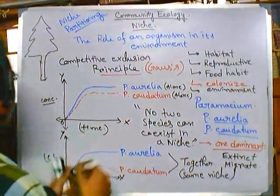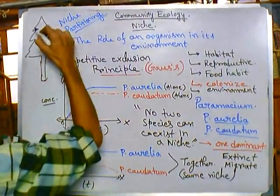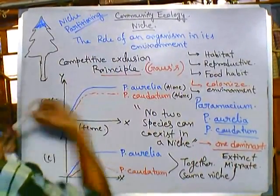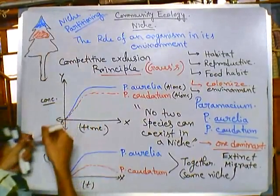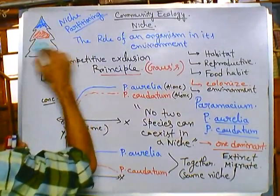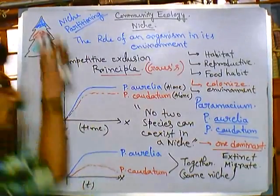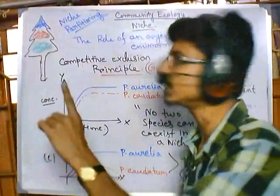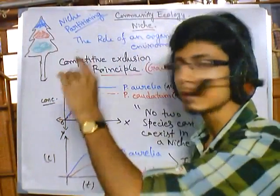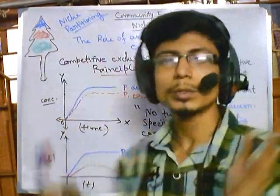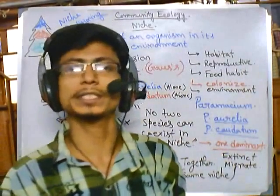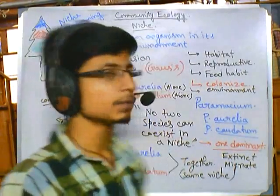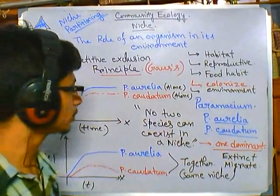For example, the niche for the blue bird is the top region of the tree, the niche for the red bird is the middle region, and the niche for the green bird is the bottom of the tree. This distribution of bird habitats within a single tree is called niche partitioning, achieved to minimize competition so all species can continue their journey.